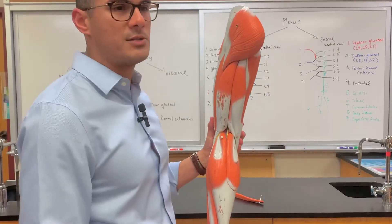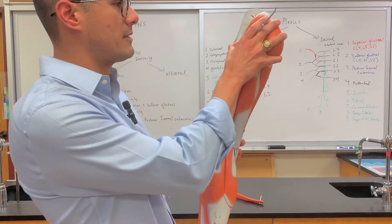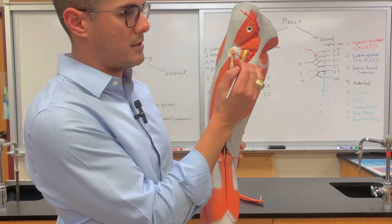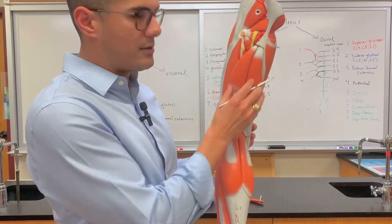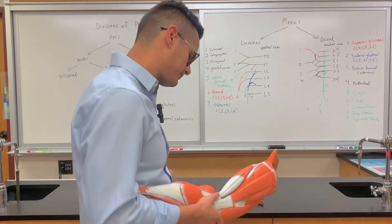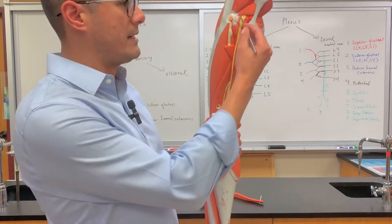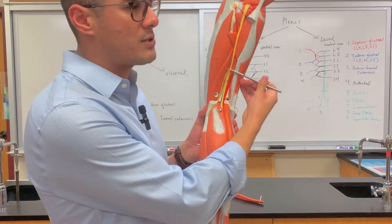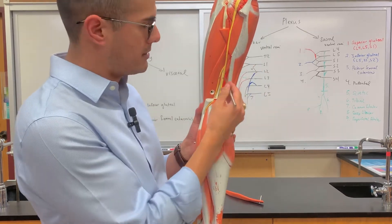Now looking at the posterior view of the leg - this is the glute max. Taking the gluteus maximus off, what's shown here is what's known as the sciatic nerve, number 83. Taking the hamstrings off to show the nerve - the sciatic nerve goes all the way down here until we reach the point where it bifurcates or diverges into two different nerves.